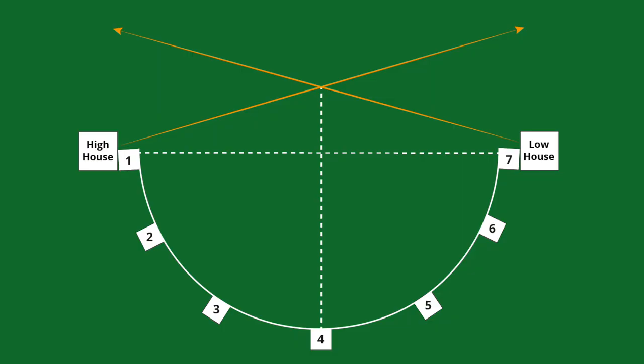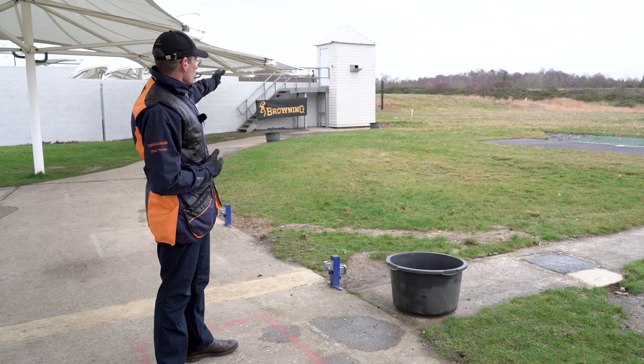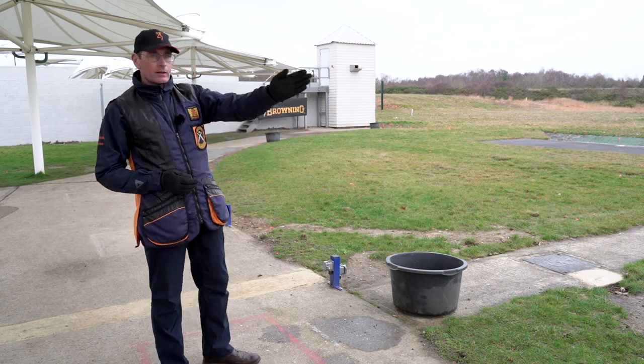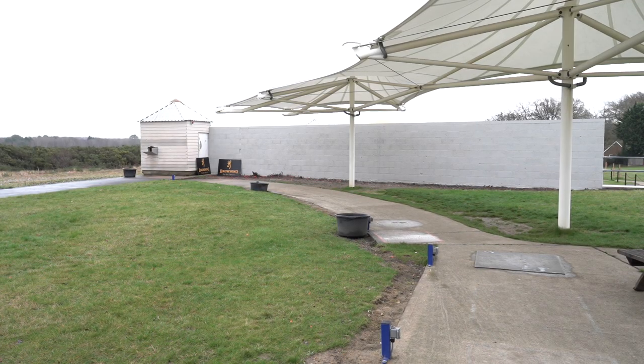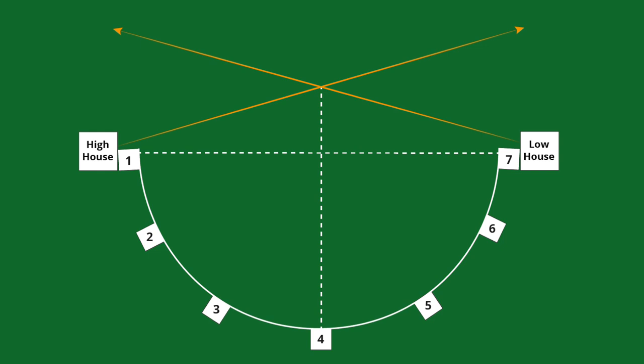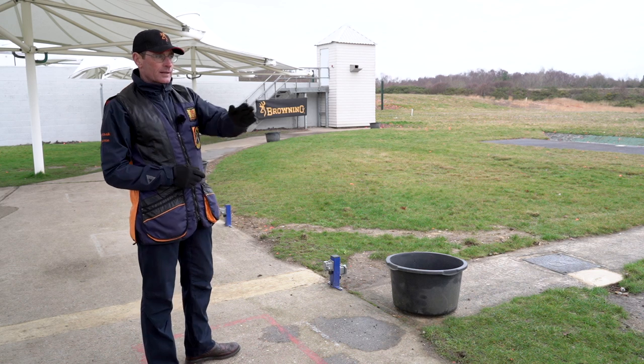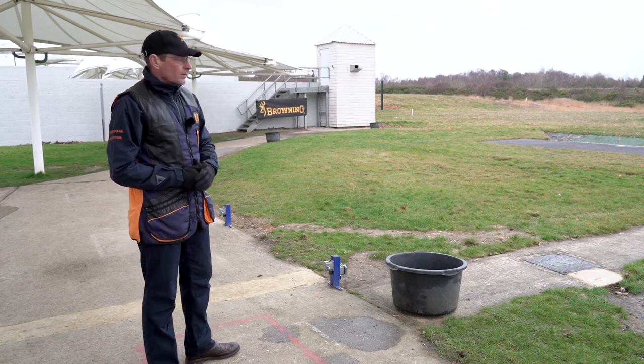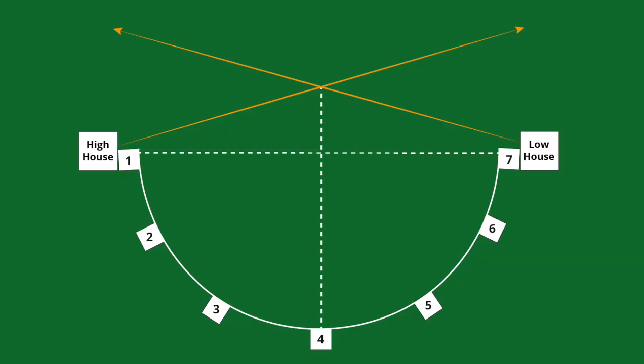The Skeet layout is universal around the world. The dimensions of it, depending on which discipline you're shooting, will change the rules and the sequence in which it's shot. You've got a high house and a low house, trapping each, and in English Skeet you've got seven shooting stations. Look around where the buckets are indicating the seven stations, one being beneath the high house and seven beneath the low house.